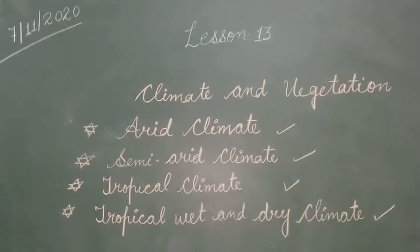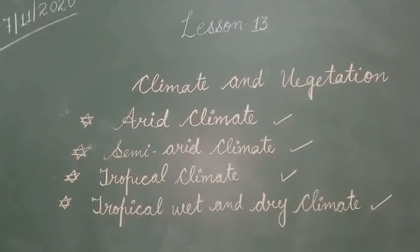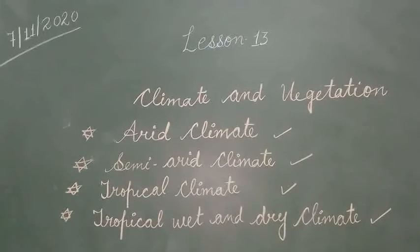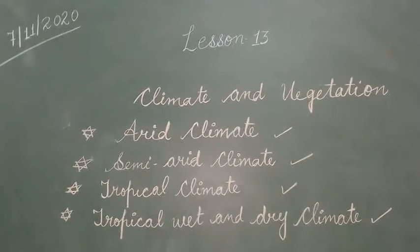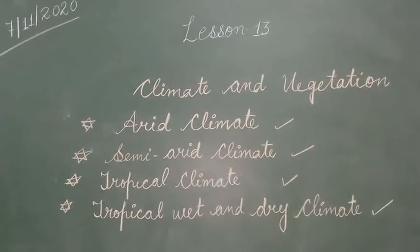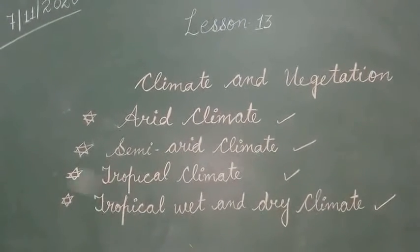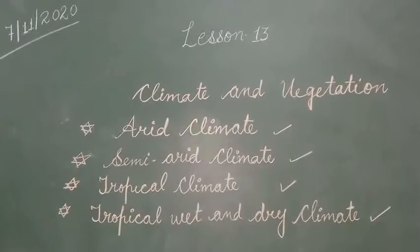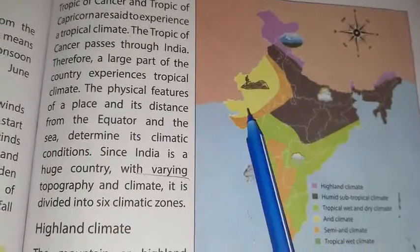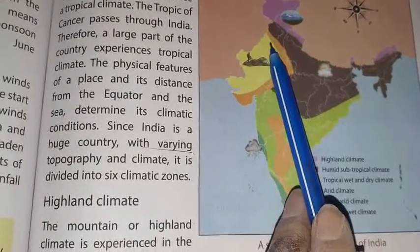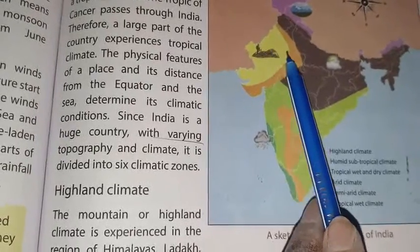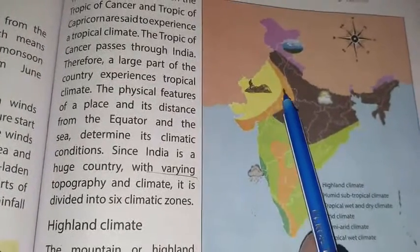The temperature in this zone may shoot up to 50 degrees Celsius in summer. Now, see in the map the arid climate area. This yellow portion is arid climate — here it is Gujarat and Rajasthan. In this area we find arid climate.